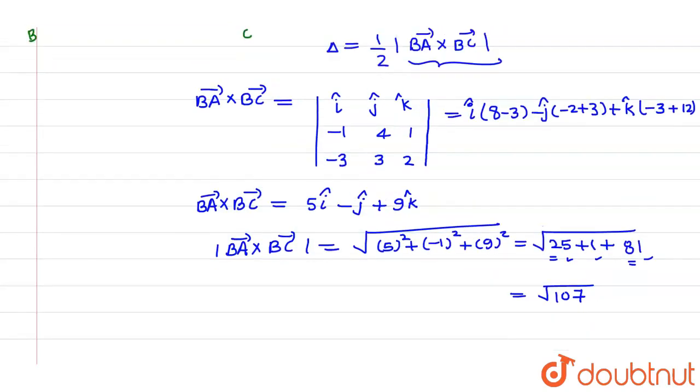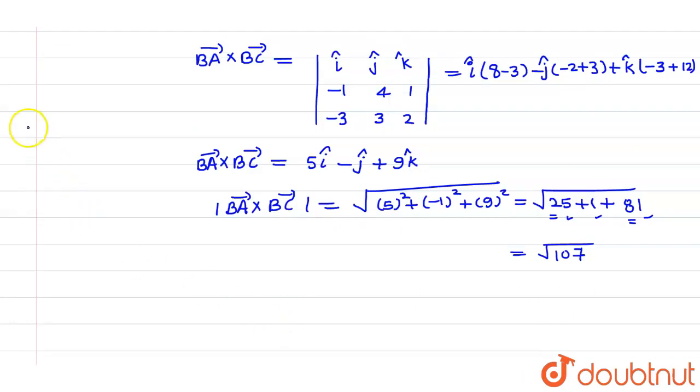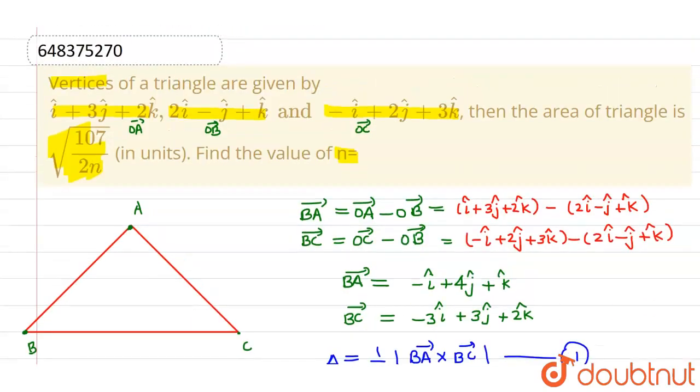So if this is 107, and if I substitute this value in this equation number 1, then the area of triangle will be given by root 107 divided by 2. Now, this can be written as root 107 divided by 4.